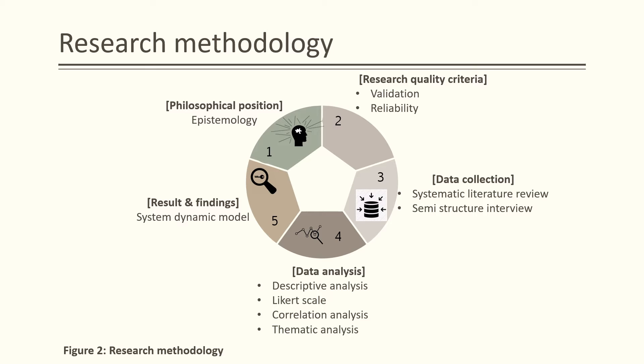Figure 2 presents the research methodology used to seek answers to the research questions. The research methodology was divided into five stages. I started by finding out what is known about scheduling techniques and road project delays. Once the research aim was identified, the next stage was to establish quality criteria based on validity and reliability. For data collection, the research adopted a mixed methods approach, where a qualitative method based on systematic literature review and semi-structured interviews examined factors influencing road project delay, and a quantitative method was used to analyse the data. After data collection, the third stage was to analyse the collected data using four different techniques: descriptive analysis, Likert scale, correlation analysis, and thematic analysis. The last stage was to develop a dynamic model based on the data analysis.